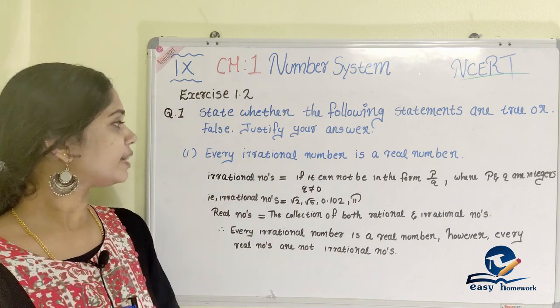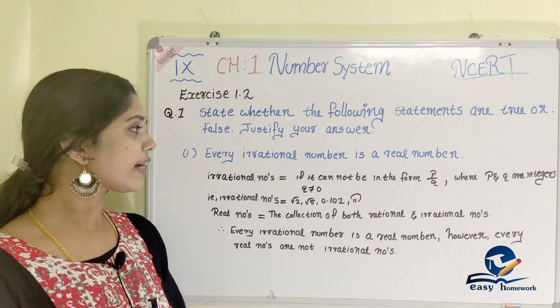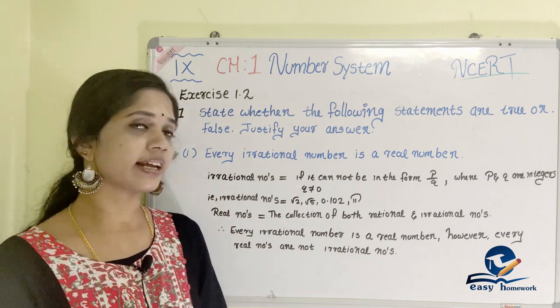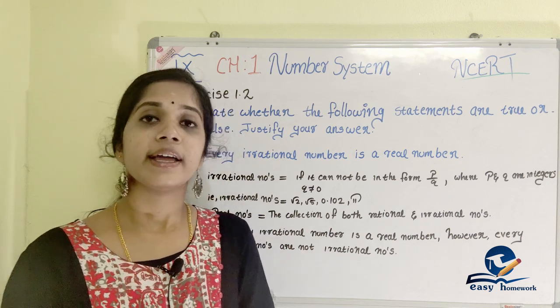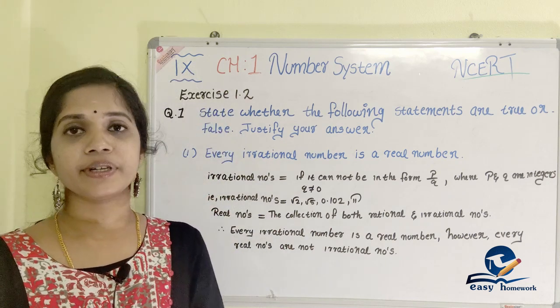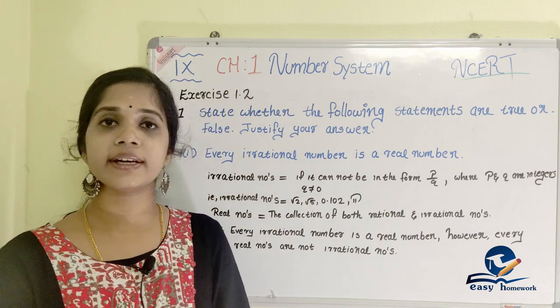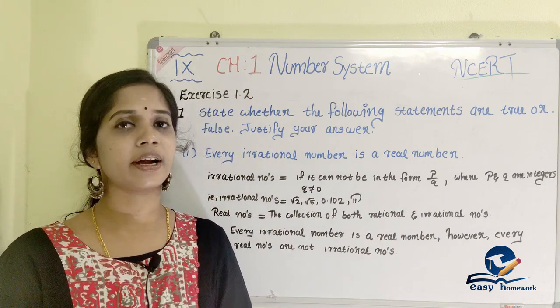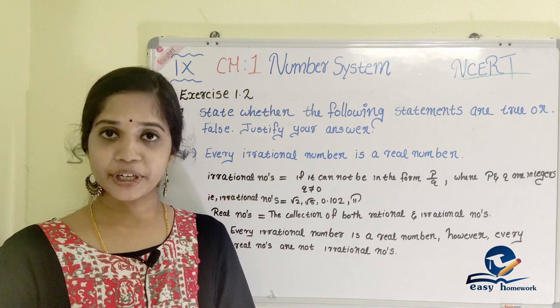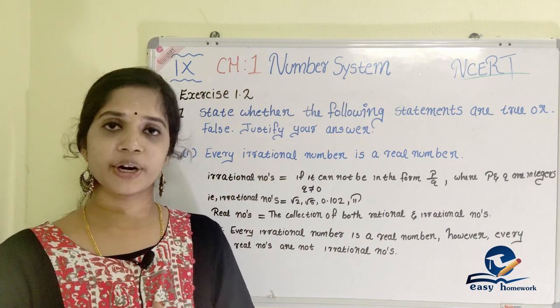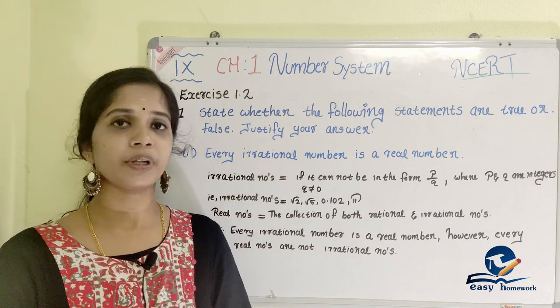The first statement is: Every irrational number is a real number. All irrational numbers are real numbers. We need to determine whether that statement is true or false and check the answer.